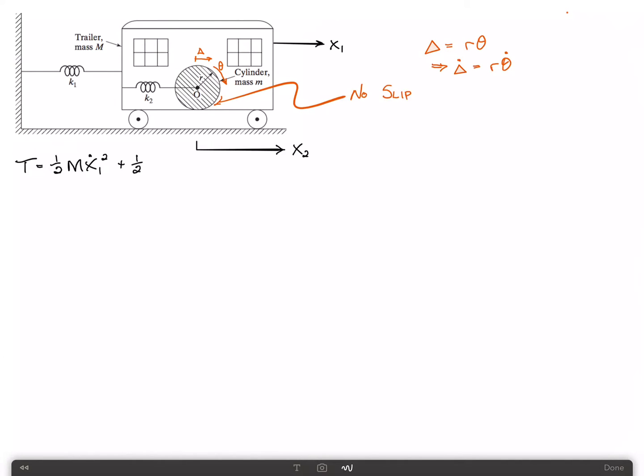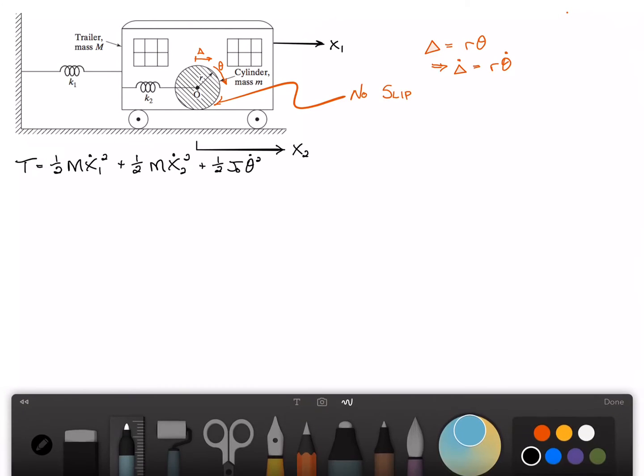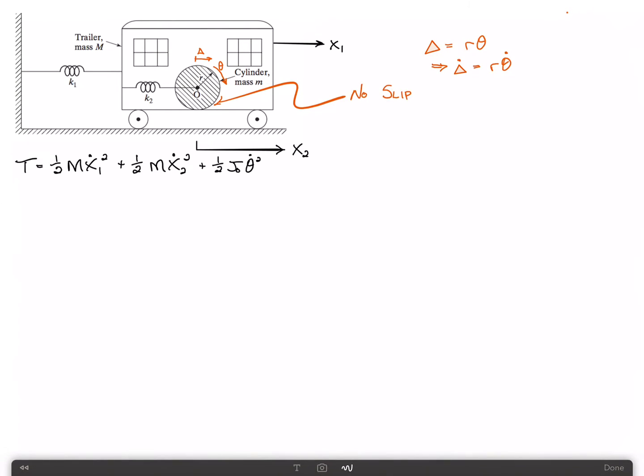Well, the cylinder has both translational kinetic energy since it's translating, and it also has rotational kinetic energy since it's rolling. We need to include the effects of both of these. The translational kinetic energy is simply one-half times little m times x2 dot squared, and the rotational kinetic energy would be one-half times j0, the rotatory inertia about its center point, times theta dot squared. For a cylinder, j0 is equal to m r squared divided by 2.